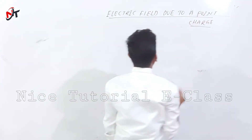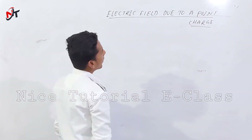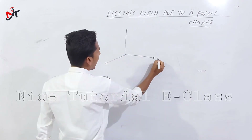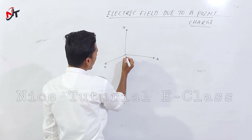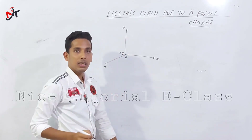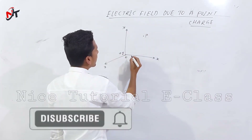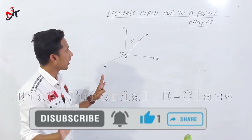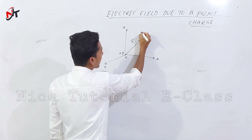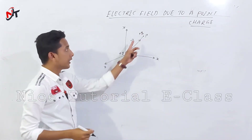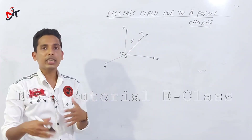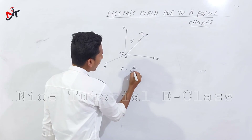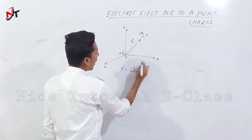Electric field due to a point charge. Let us consider a coordinate system with x-axis, y-axis, and z-axis. The coordinate system has the source charge at the origin. The point of observation has a position vector R-vector with respect to the origin. We place a test charge Q₀ at that point. The electrostatic force experienced by the test charge, according to Coulomb's law, is F = 1/(4πε₀) · qQ₀/R².